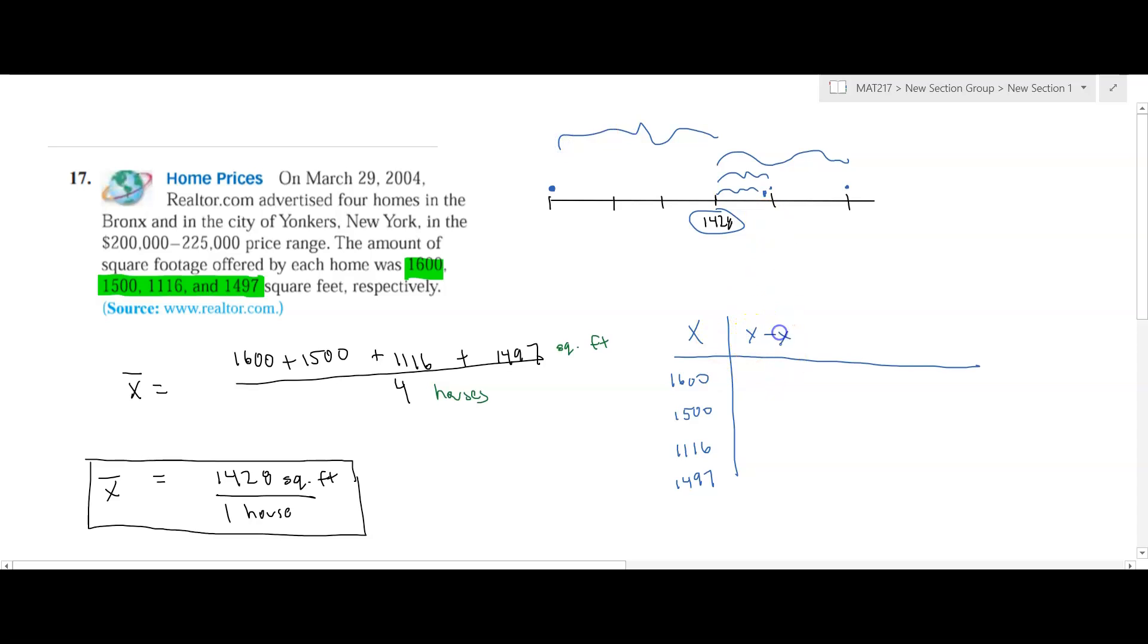So what we're going to compute in part of this sample standard deviation is the difference between the value and the mean. So 1,600 minus 1,428 comes out to 172, and that's positive because we noticed that it is greater than the mean, so greater than the mean would be a positive number, less than the mean would be a negative. So 1,500 minus 1,428 would be 72. Again, a positive there since that's above the mean. But this value here, 1,116, when we compare that to 1,428, we get a value that's negative, 312 units below the mean. So we get a negative 312.